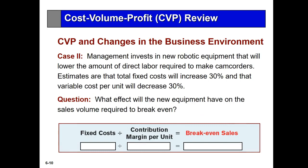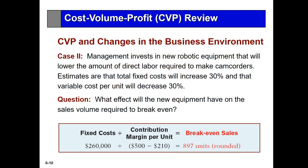In another scenario, we invest in equipment that lowers the direct labor cost to make camcorders. Our fixed costs will go up 30%, but our variable costs will decrease by $30. If fixed costs go up 30%, they become $260,000. The contribution margin per unit will also go up, and therefore the break-even sales will go down. This alternative would mean we'd hit break-even a lot earlier than we normally would.